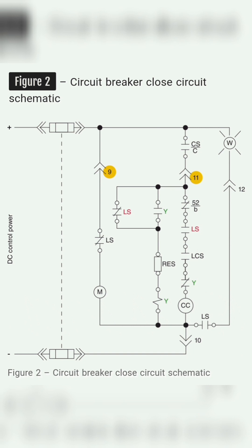With the breaker open, contact 52B is closed. The 52B contact is an auxiliary contact that simply mirrors breaker status — it is closed when the breaker is open, and open when the breaker is closed. The normally open spring charged limit switch LS contact, located below the 52B contact, is closed when the closing spring is charged. This contact ensures that mechanical force is available to close the breaker. Downstream of the 52B contact is the latch check switch LCS, which enables instantaneous reclosing by confirming the mechanical mechanism has been reset after a breaker trip.